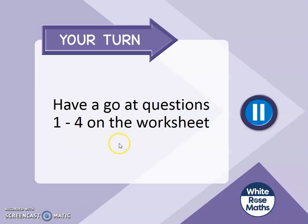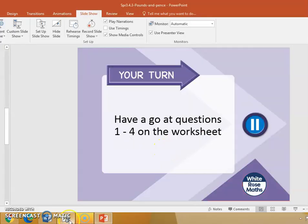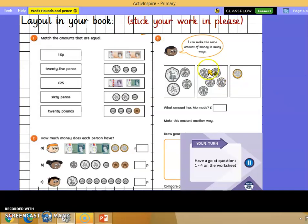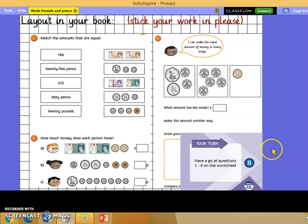I'd like you to pause here and have a go at questions 1 to 4 on the worksheet. Stick your work neatly into your book. Match the amounts that are equal — read this side and join them to the right amounts on that side. Number 2: how much money does each person have? Continue until you've finished question 4 and then come back to me.